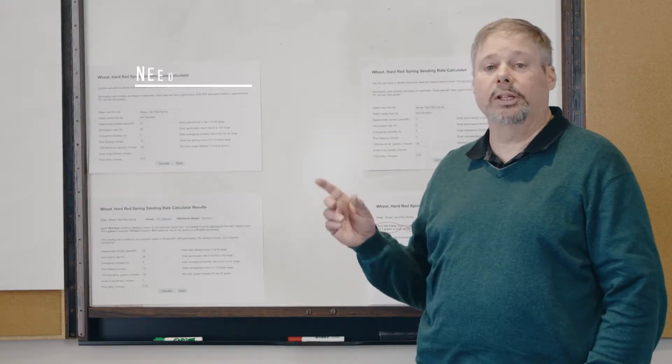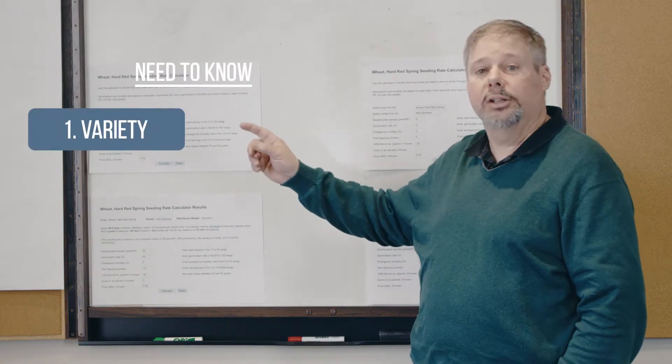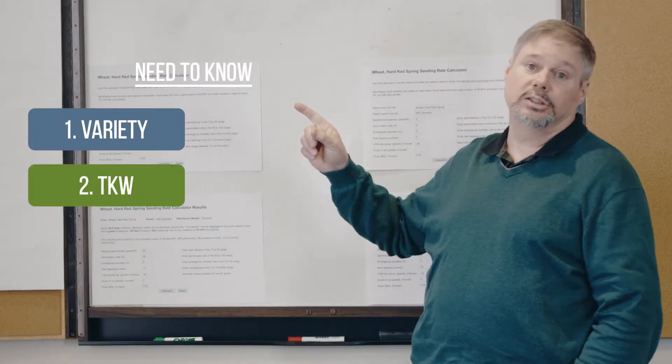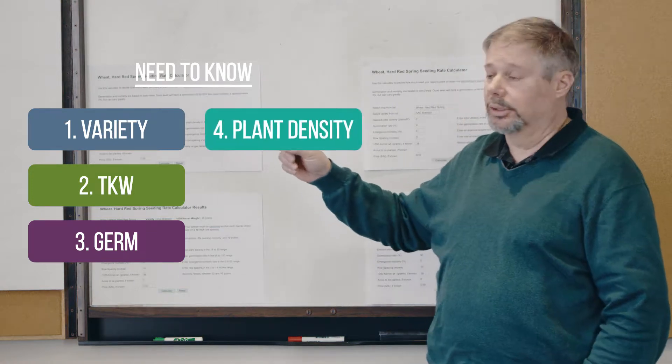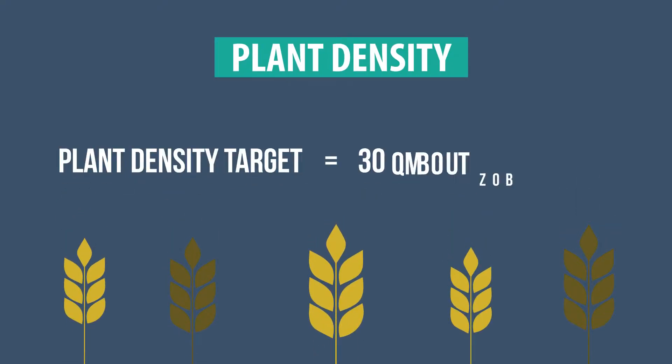On the government website, you'll see that you need several things: the variety, the 1,000 kernel weight, the germ, and the plant density. In the modern world, in today's world, we want to push density.